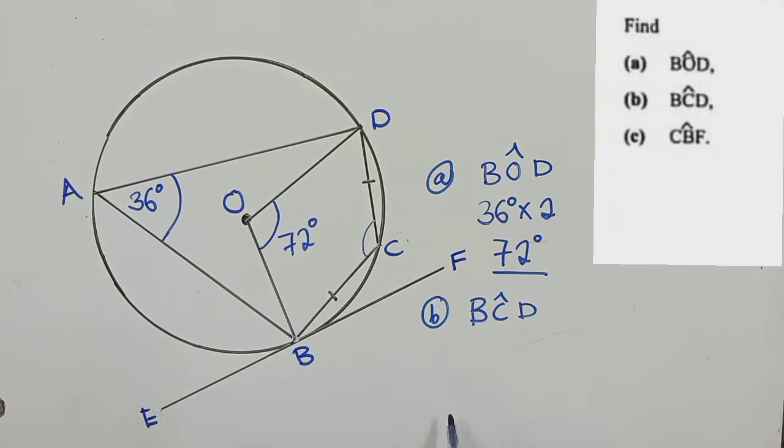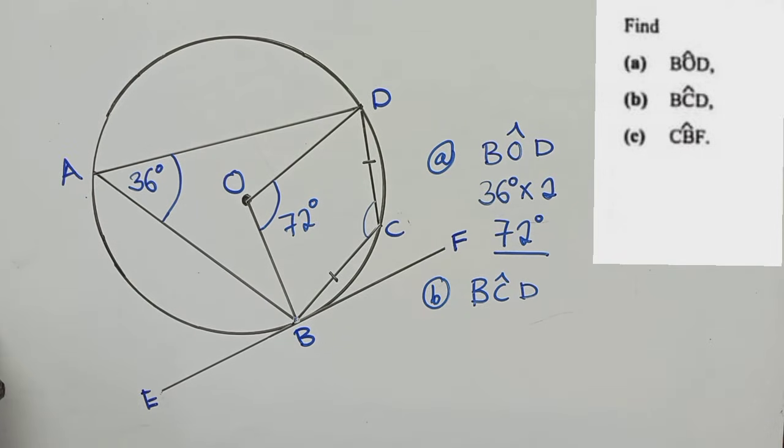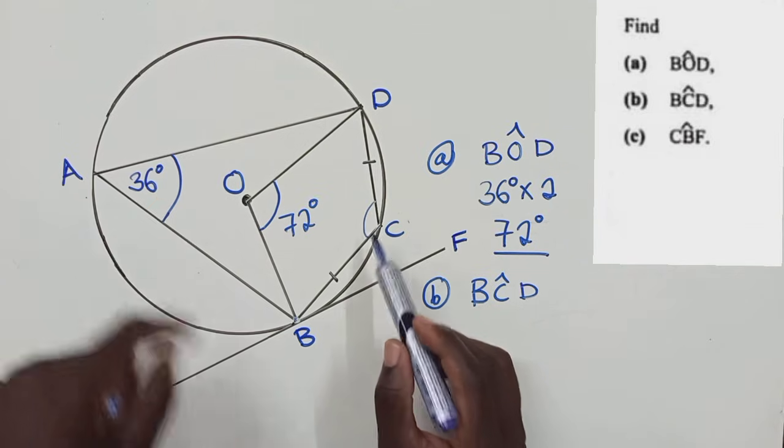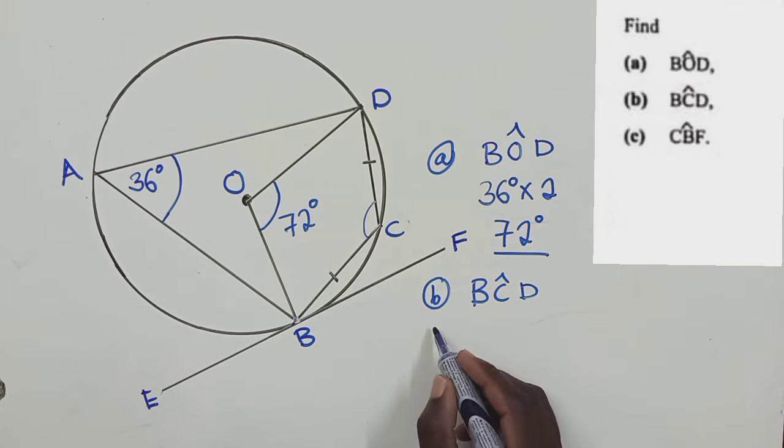So we use the property of opposite angles. So property of opposite angles says that the angle which is right here and the angle which is here, when you add them, they must give you 180.